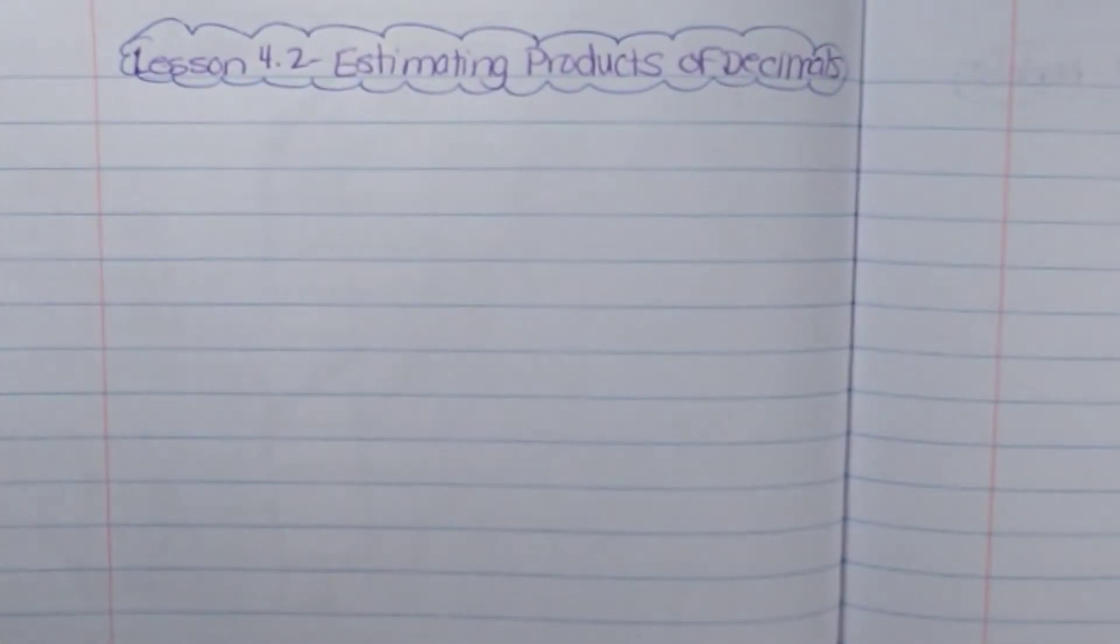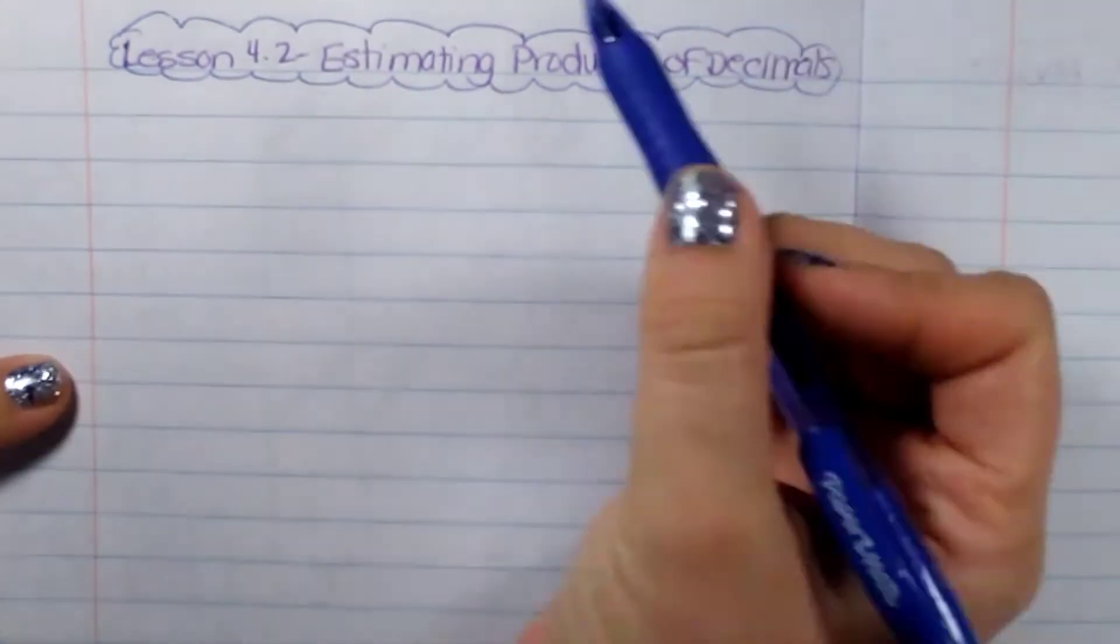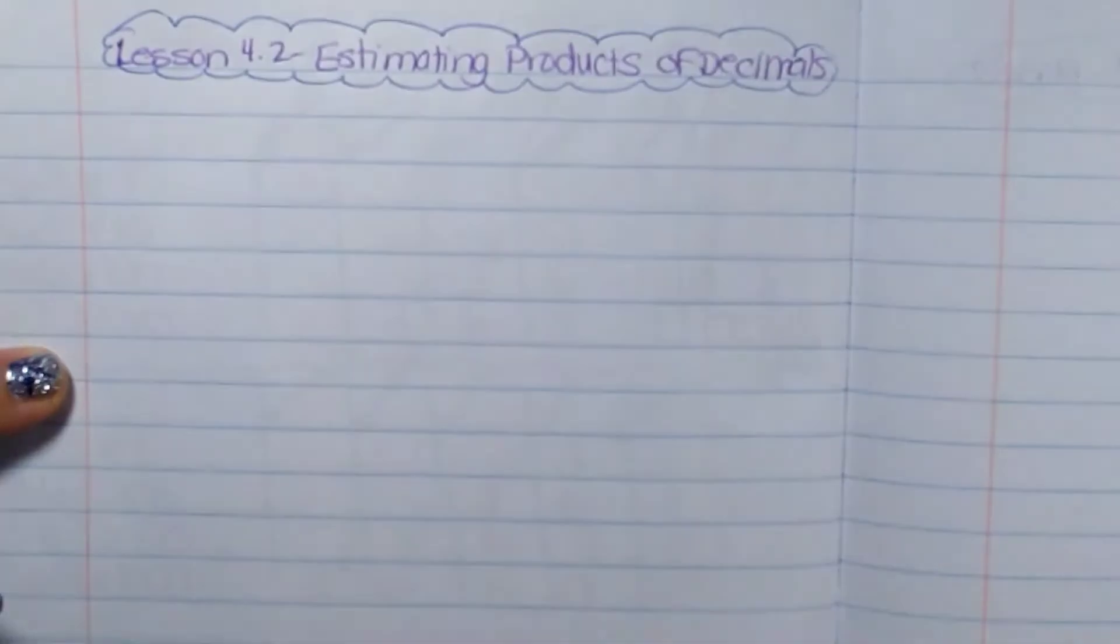Okay, we are continuing with a pattern of each topic. First, we did the topic of powers of 10. We're multiplying decimals. So now we're going to be working on estimating products of decimals. So that is going to be our title, Estimating Products of Decimals.